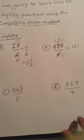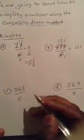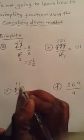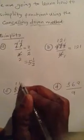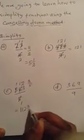C, we have 563 divided by 5. We can start canceling down. 5 into 5 is 1, 5 into 6 is 1 remainder 1, 5 into 13 is 2 remainder 3. So we have the fraction, and our answer is going to be 112 and 3 over 5.